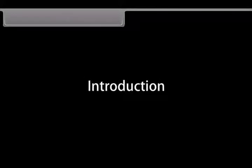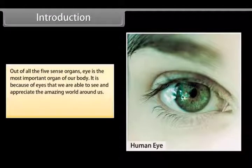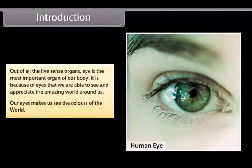Introduction: Out of all the five sense organs, the eye is the most important organ of our body. It is because of eyes that we are able to see and appreciate the amazing world around us. Our eyes make us see the colors of the world.